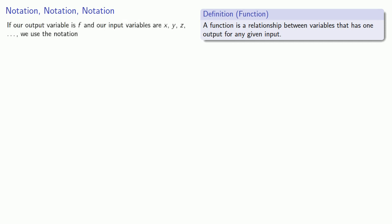If our output variable is named f and our input variables are x, y, z, and so on, we use the notation f(x, y, z, ...) to indicate that we have a function of our variables x, y, z, and so on.